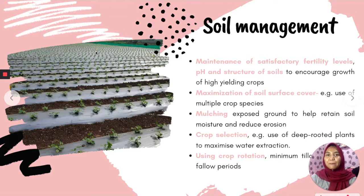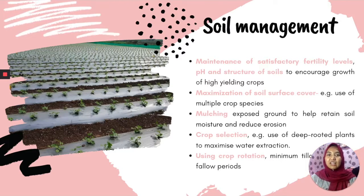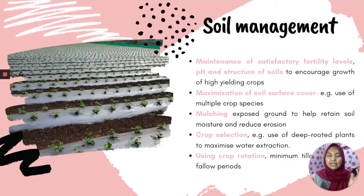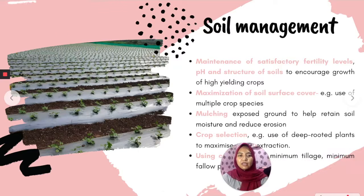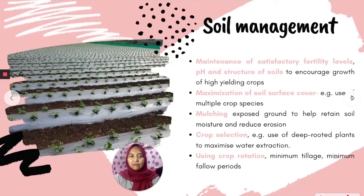As you can see in this picture, this is what we call mulch — a material used to cover the soil surface. This process is called mulching because it helps retain soil moisture and reduce erosion. For crop selection, deep-rooted plants are used to maximize water extraction. Finally, crop rotation is used to minimize fallow periods and maintain soil health.